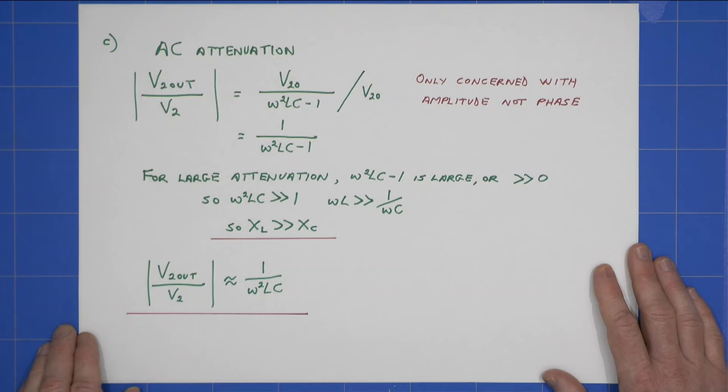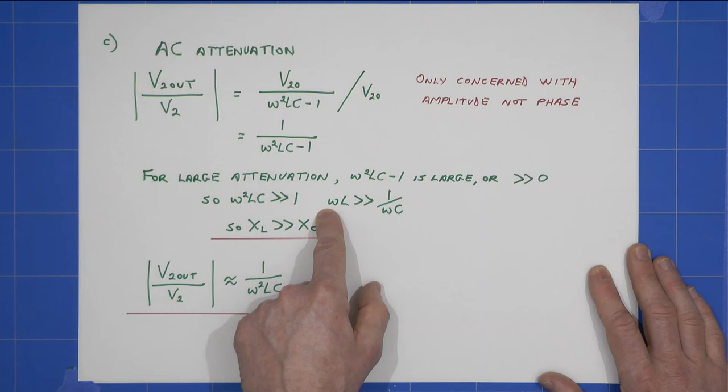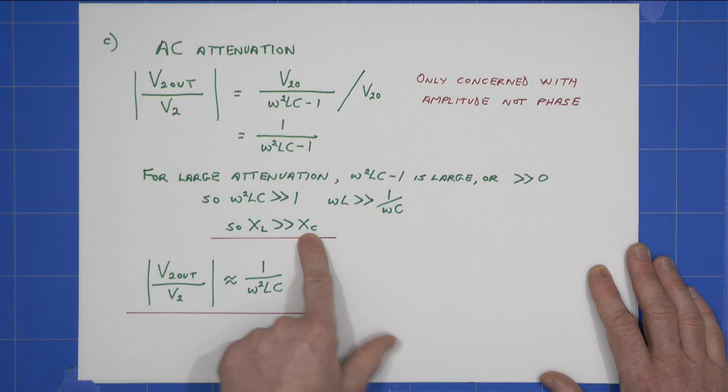And we can see, well, when that is large, it's much, much greater than zero. So rearranging, we can see that that condition is true, and so XL, the reactance of the inductor, must be much, much greater than the reactance of the capacitor.